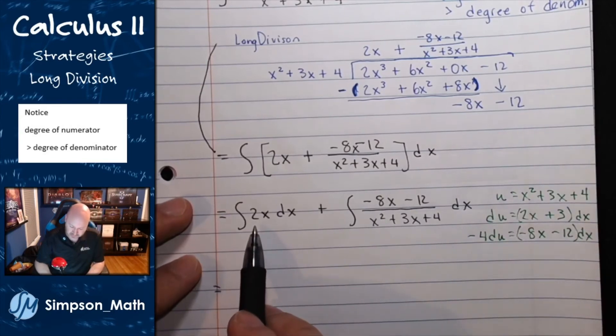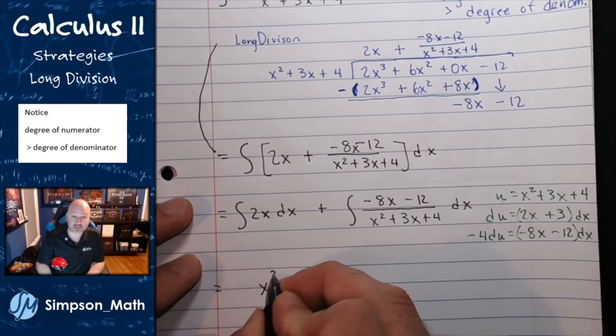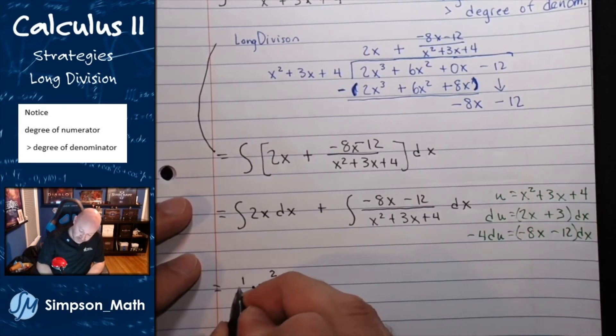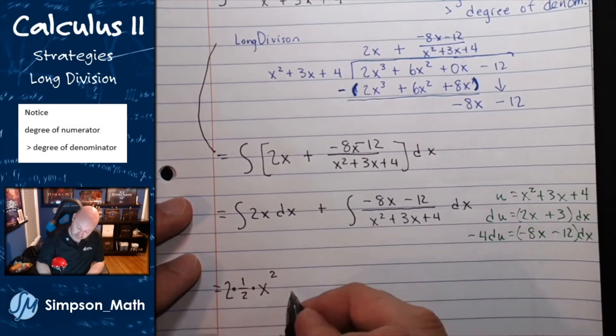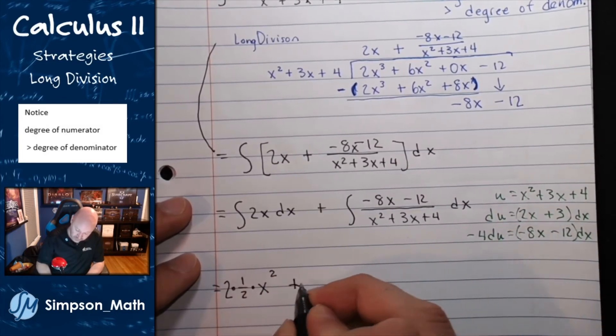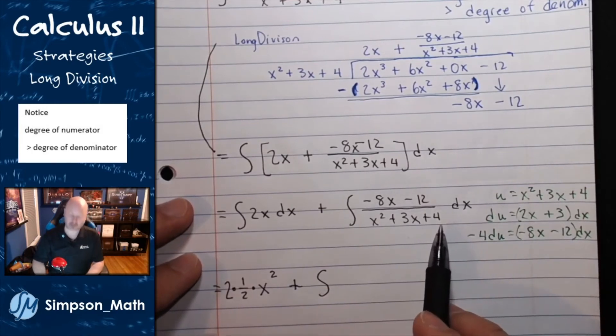I'll go ahead and take care of this. This will be x now being raised to a second power. I multiply by the reciprocal out front. I still have the coefficient of 2 out front.